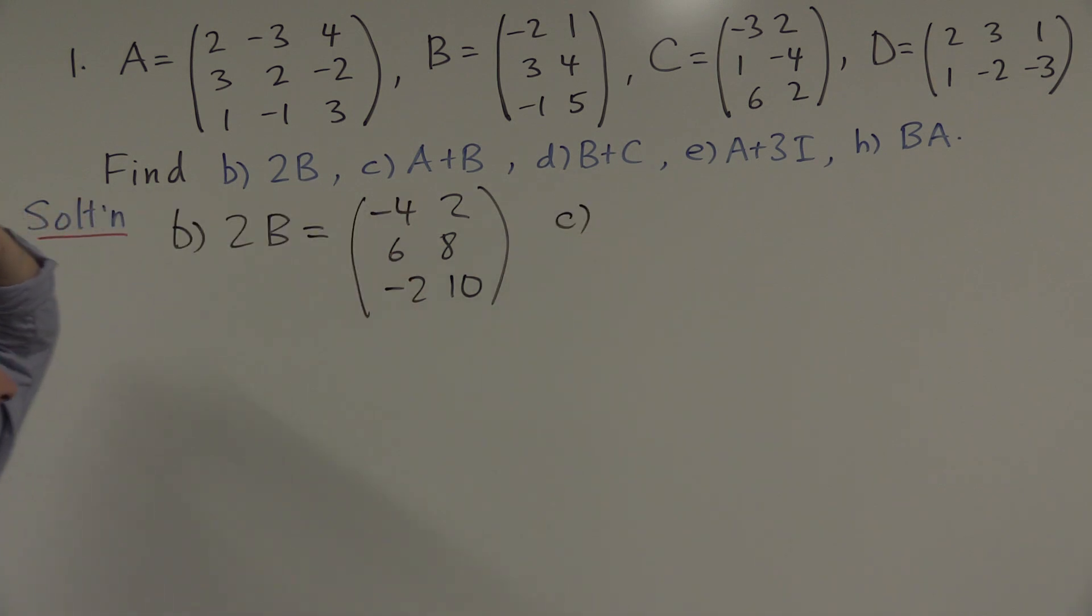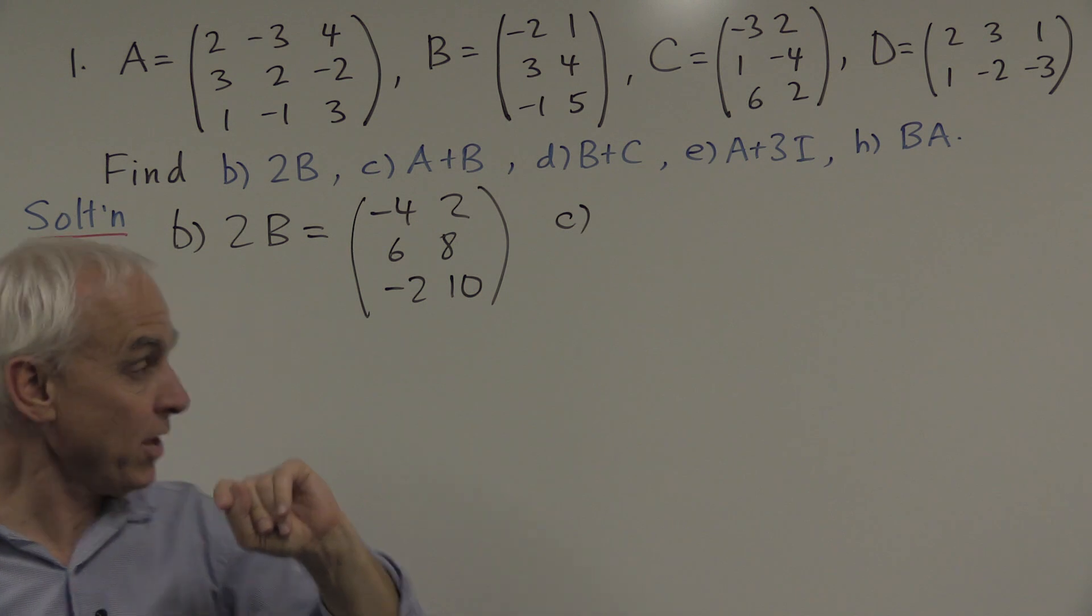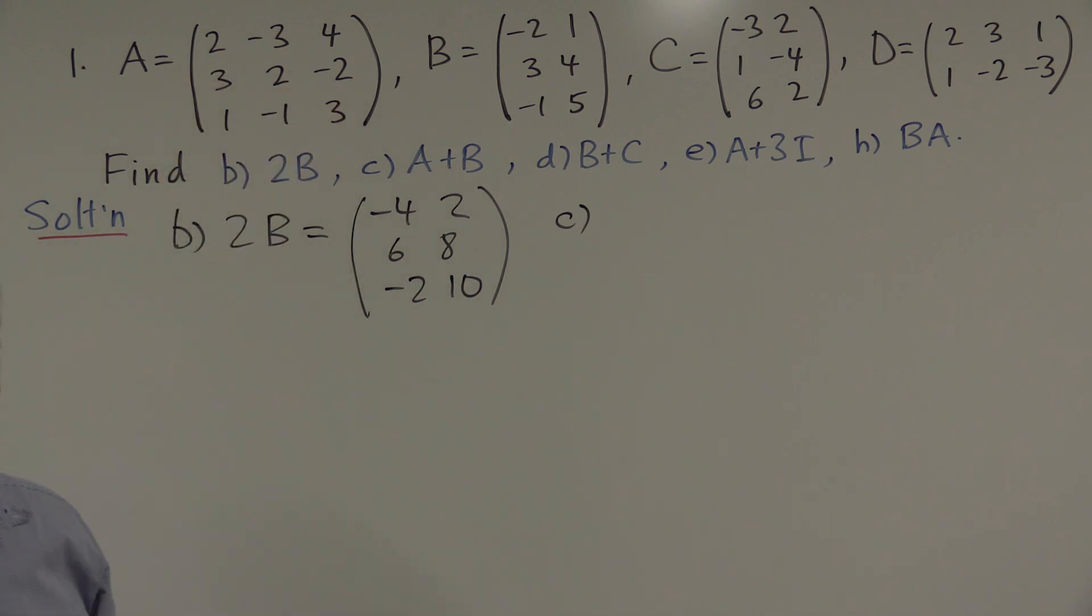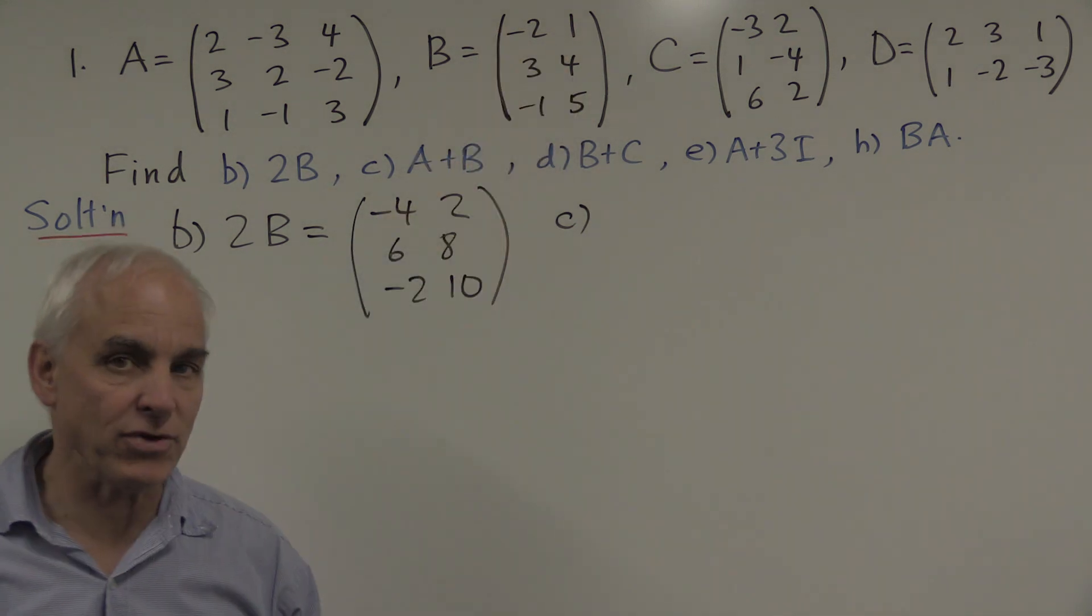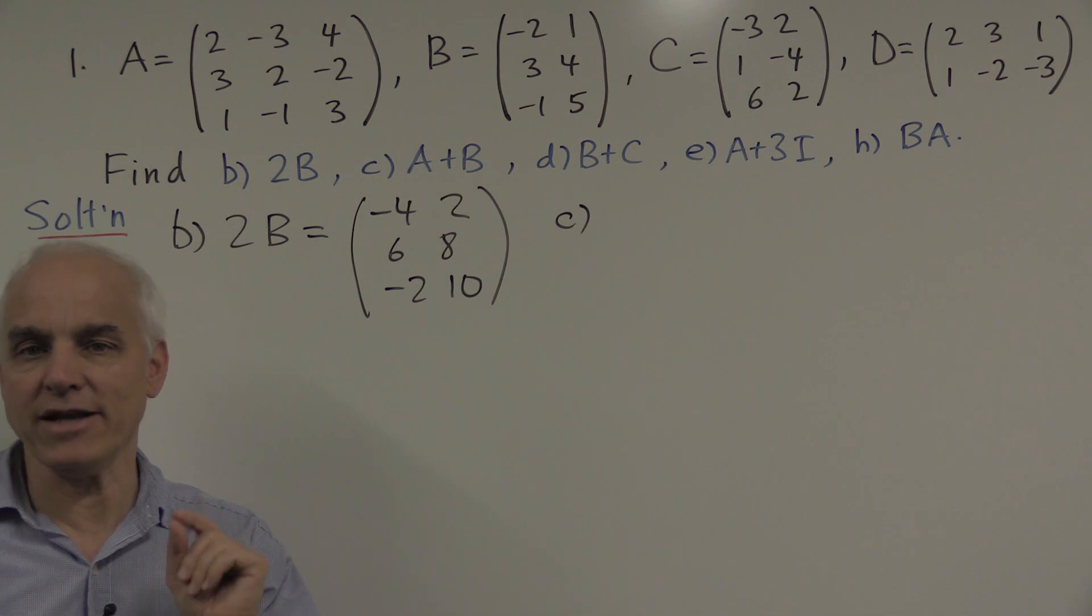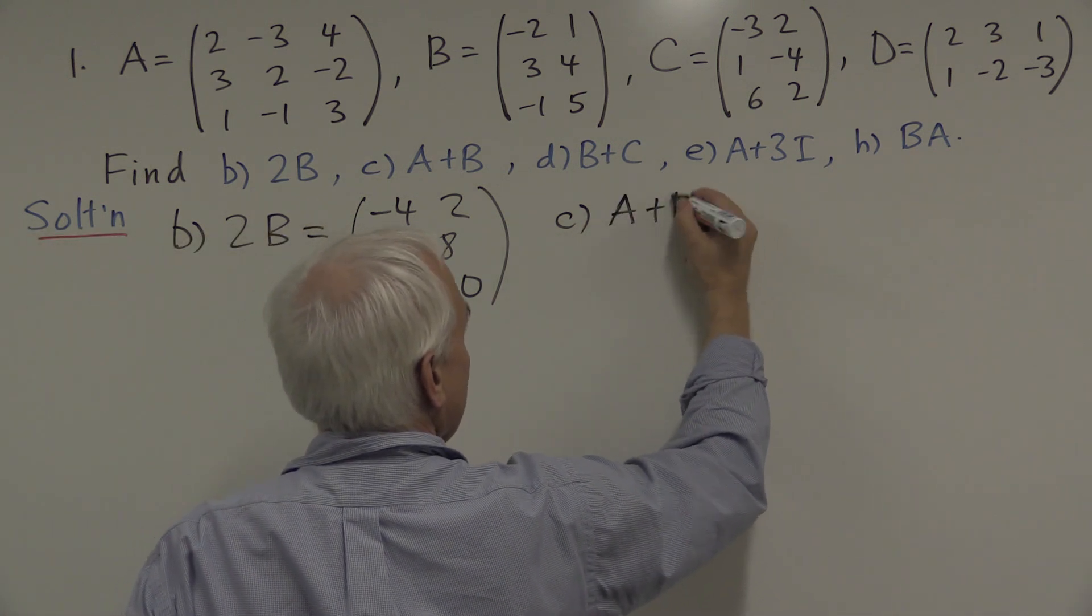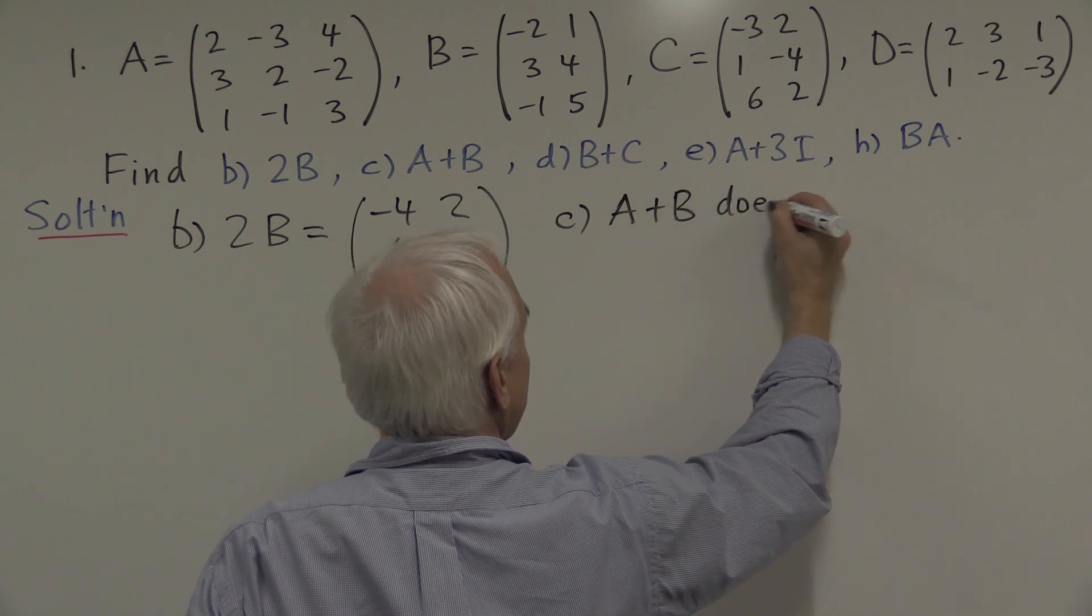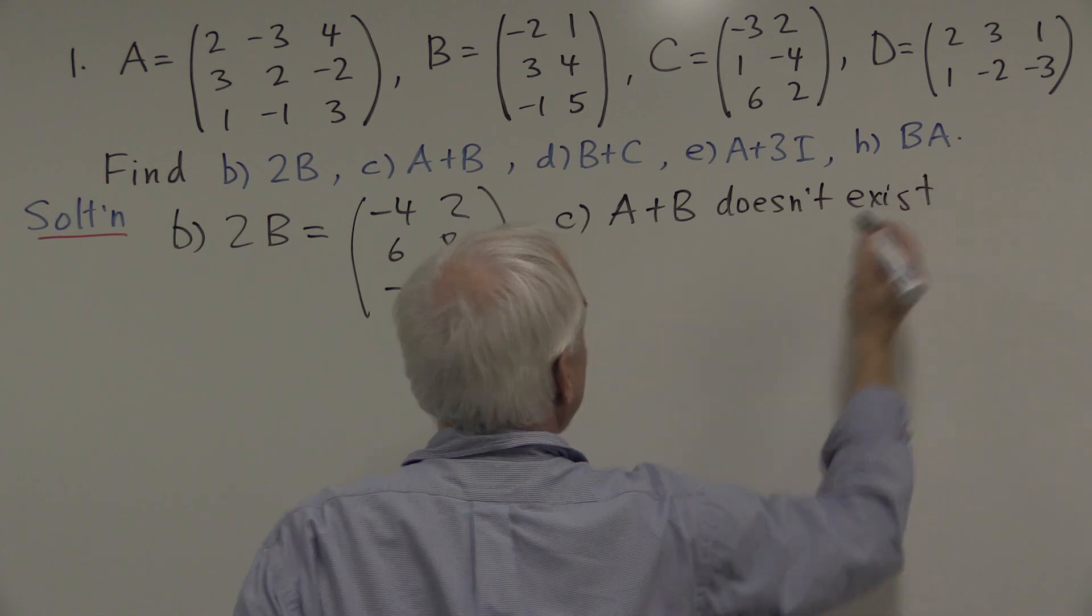How about next one? A plus B. There's a matrix A, there's a matrix B. Notice that there are different sizes. This is a three by three matrix. This is a three by two matrix. They're not the same sizes so you cannot add them. So A plus B doesn't exist. It's not well defined.